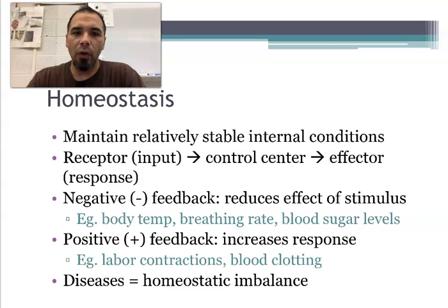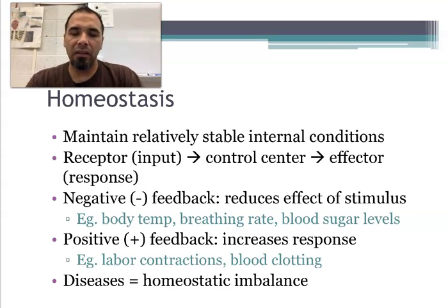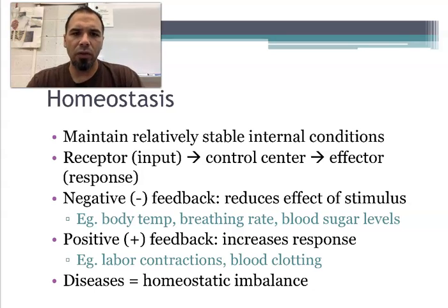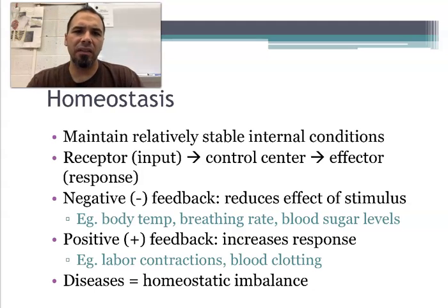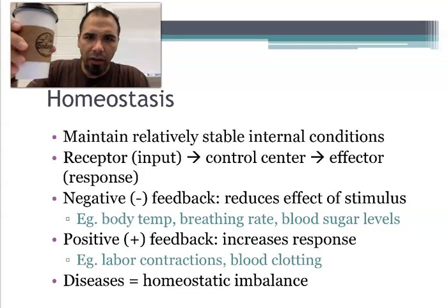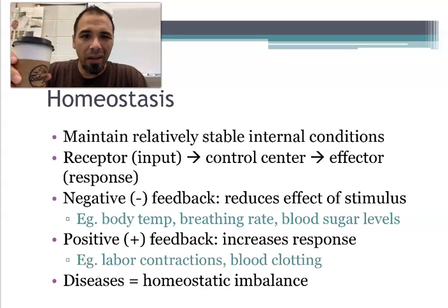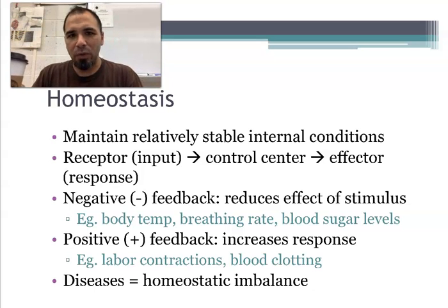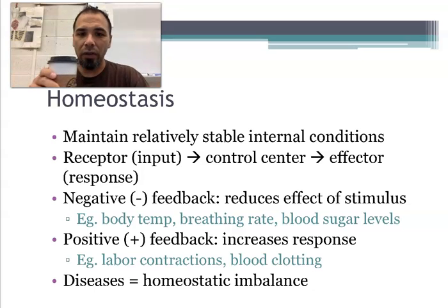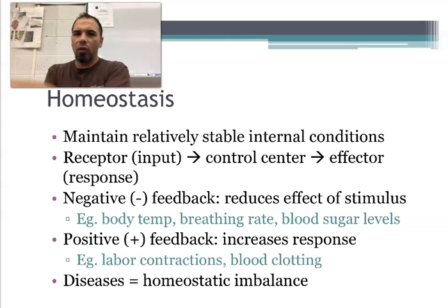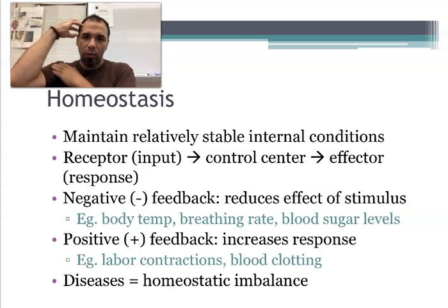So, homeostasis is going to be the focus of this. In homeostasis, this is your body's ability to maintain a stable environment. You've got a receptor, control center, effector, and I'm going to have you draw some pictures here in a little bit. So, the receptor is the input — think of your five senses as a receptor. The receptors are going to send that message up to my control center, which is often the brain.